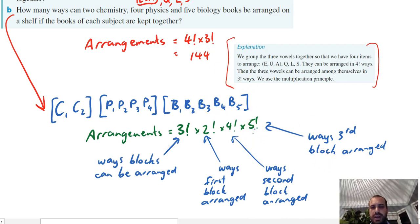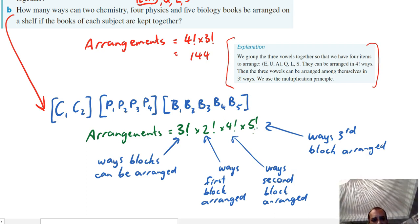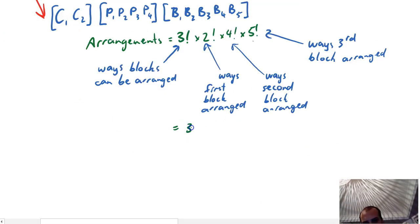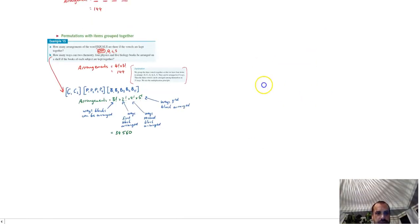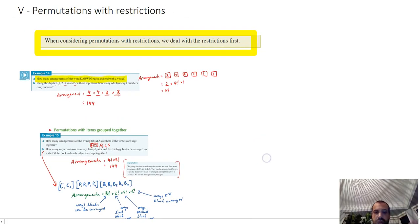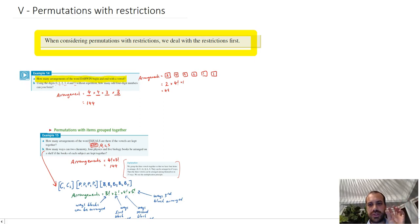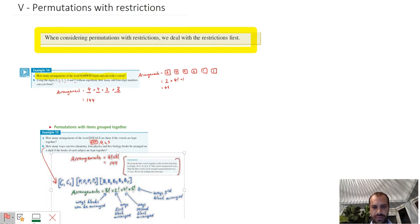Which is a large number - that's 34,560. Alright, so this has been permutations with some sort of restrictions. The best thing that you can do is consider your restrictions first.